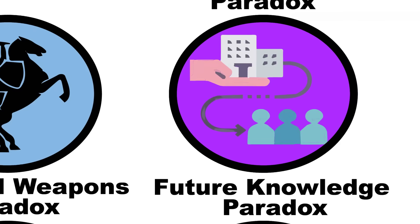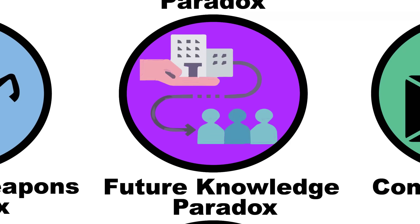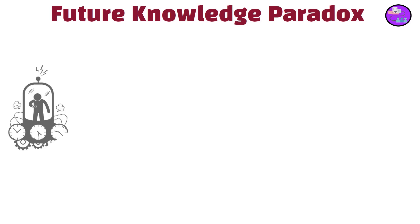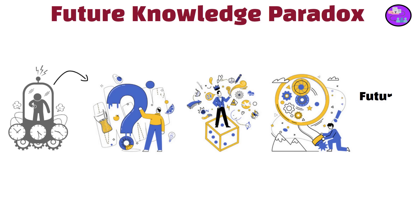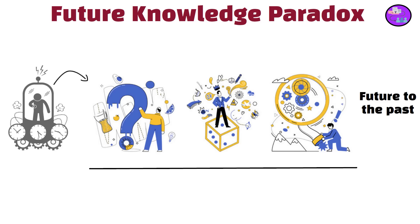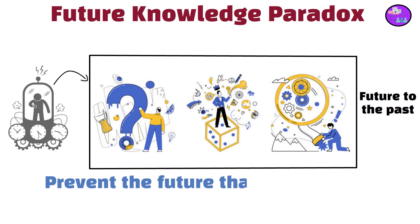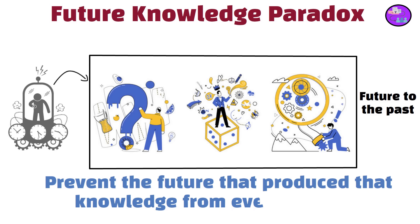The future knowledge paradox arises when a time traveler brings advanced knowledge or technology from the future to the past. If this knowledge significantly alters the course of technological development, it could prevent the future that produced that knowledge from ever occurring, creating a paradox.